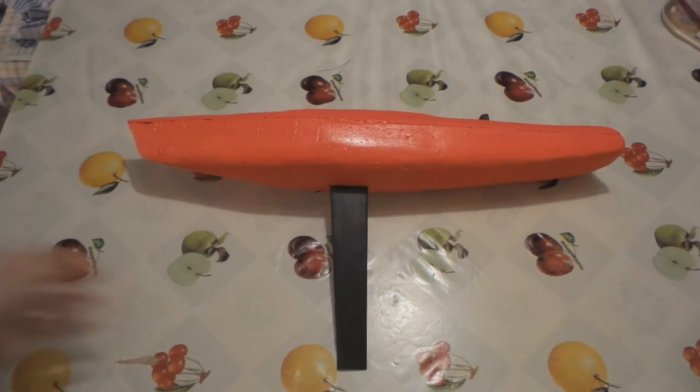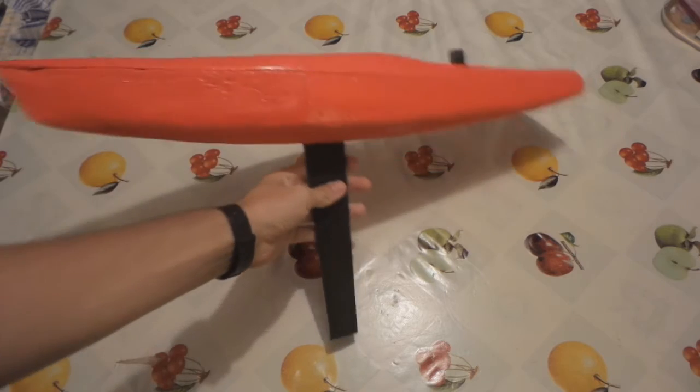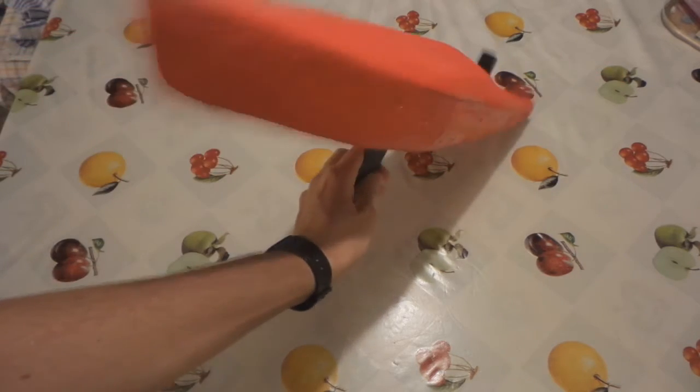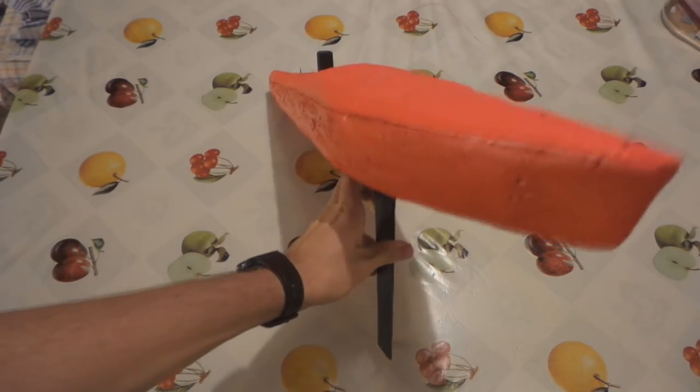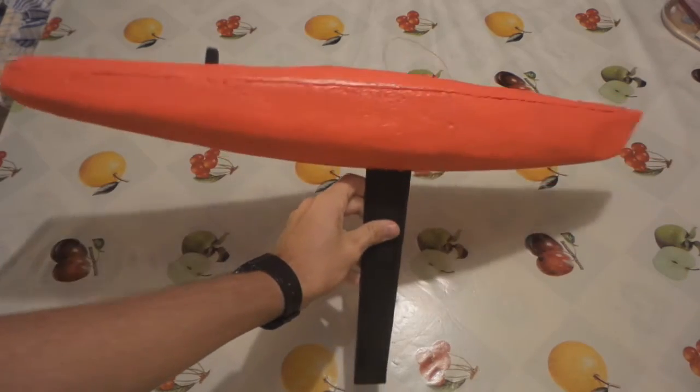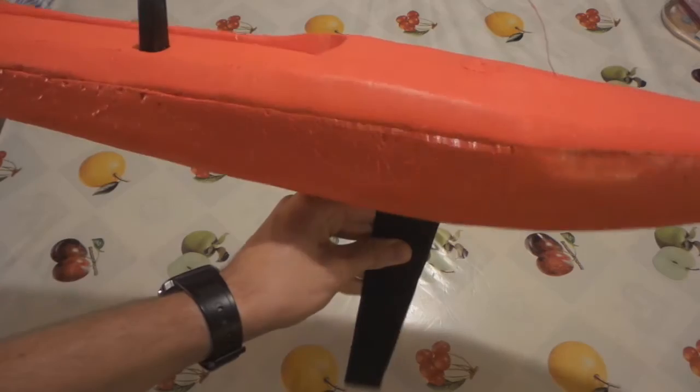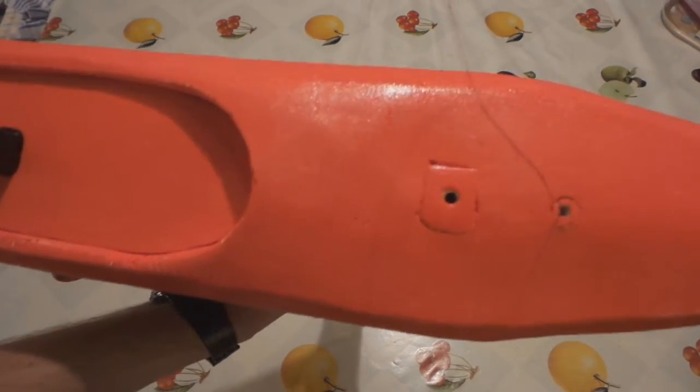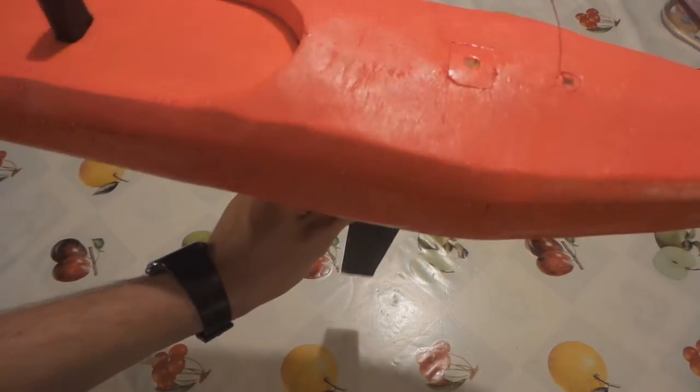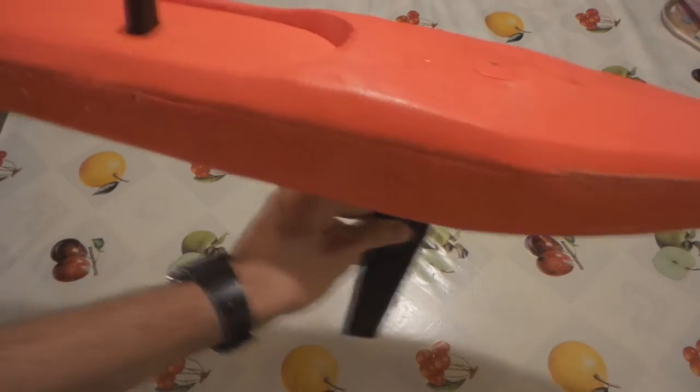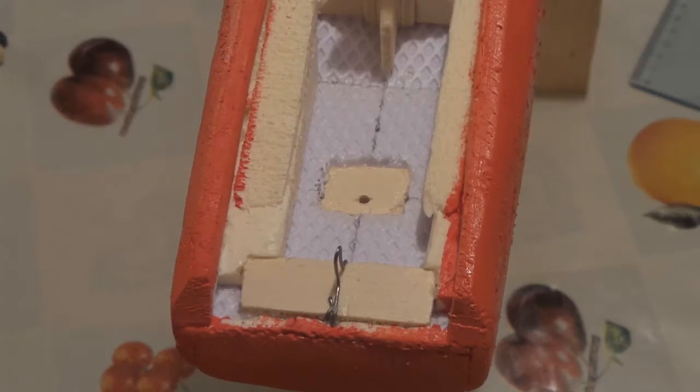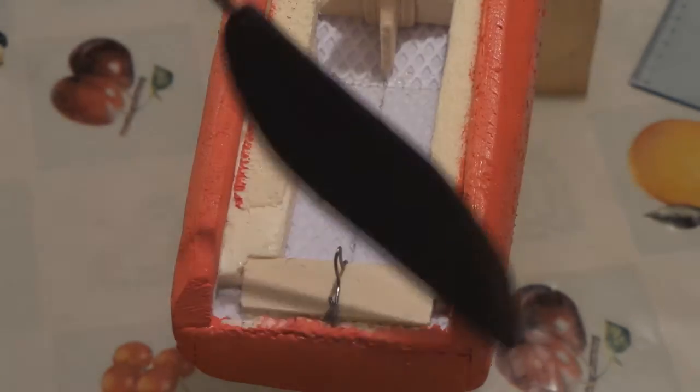Now the color is dry and it looks really good, red like a Ferrari. It's even reflecting the light very well, so it seems like glass fiber or carbon fiber. Now we have to mount the rudder onto the boat.